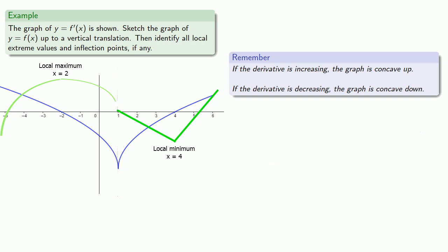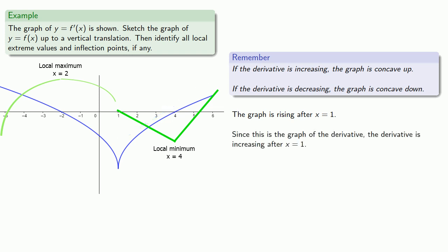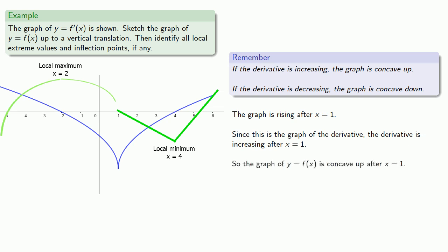Next we see that the graph is rising after x equals 1. Since this is the graph of the derivative, the derivative is increasing after x equals 1, so the graph is concave up. We have to match the skeleton, so our graph might look something like this.